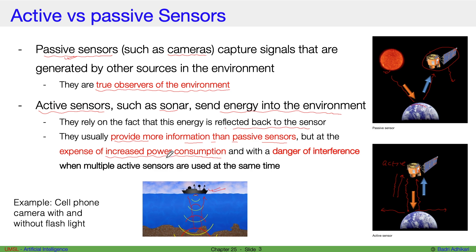Also, active sensors always have a danger of interference. So if I have, let's say, one sonar device and another sonar device, it is possible that the signal from one device may interfere with the signal from the other. So these are the two challenges or cons of active sensors: increased power consumption and danger of interference.